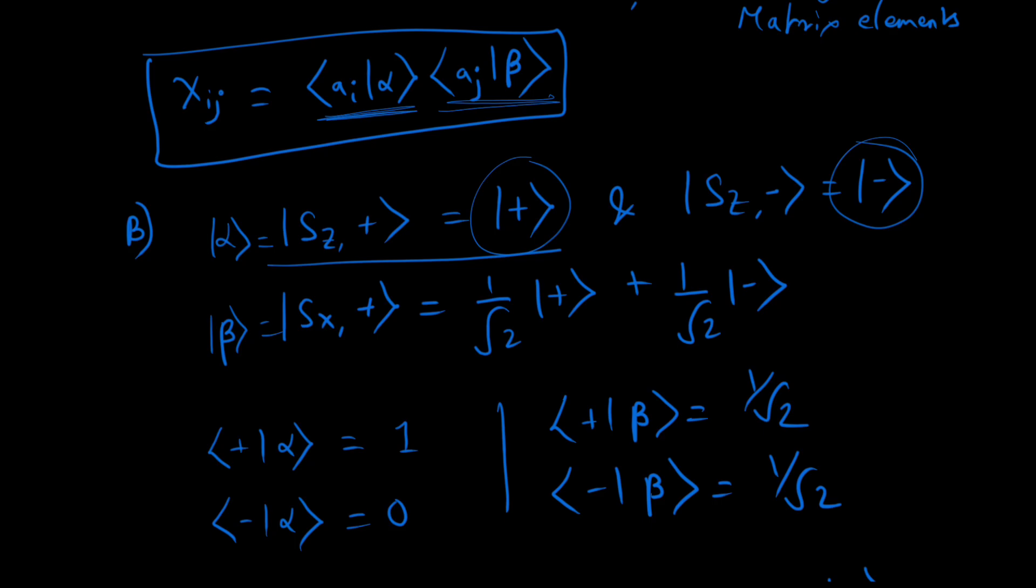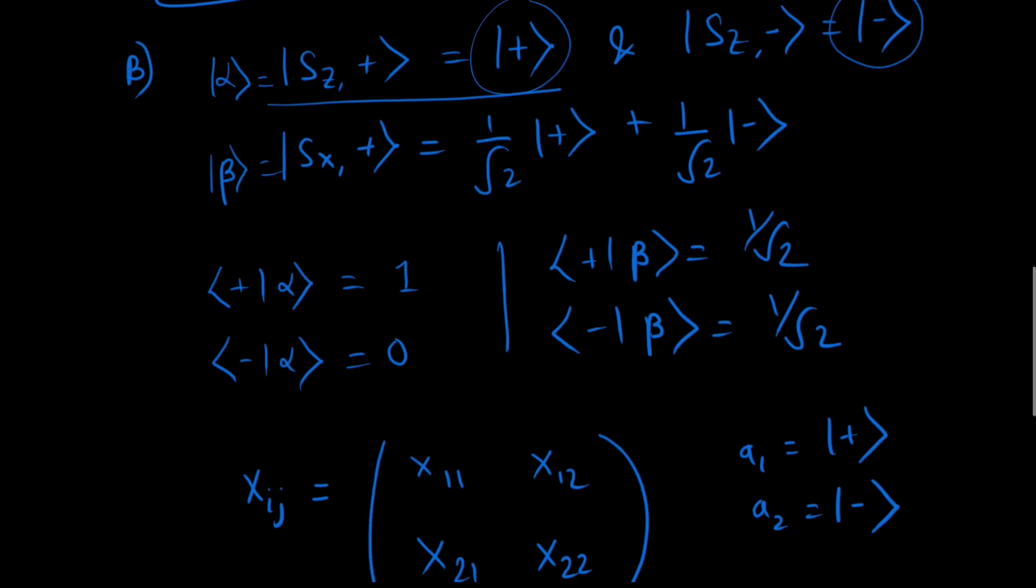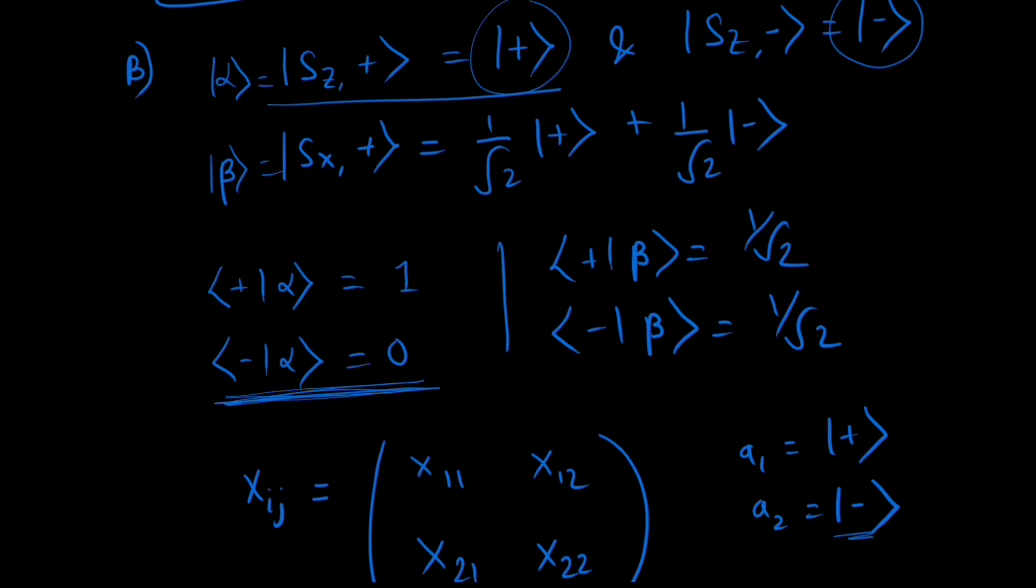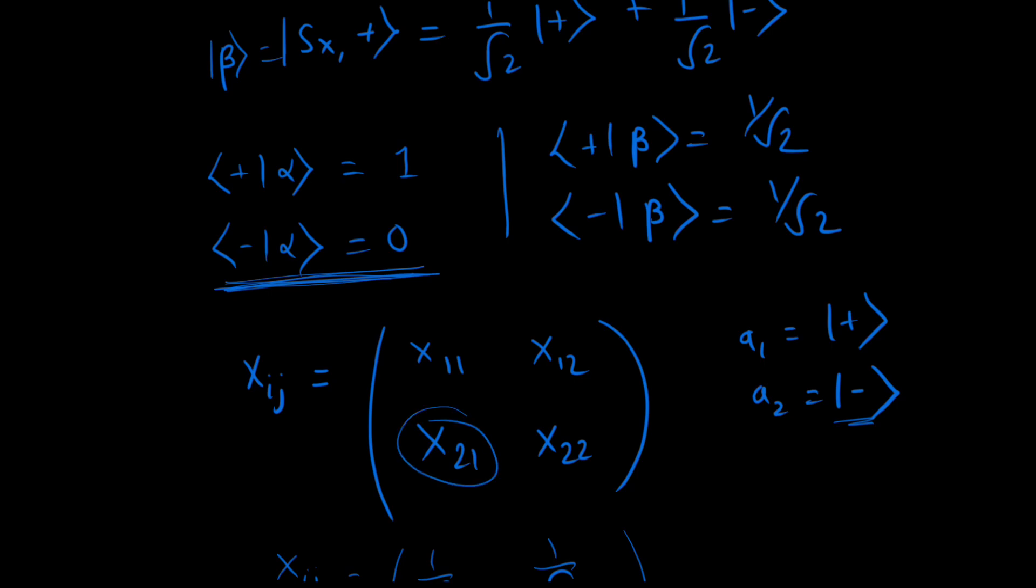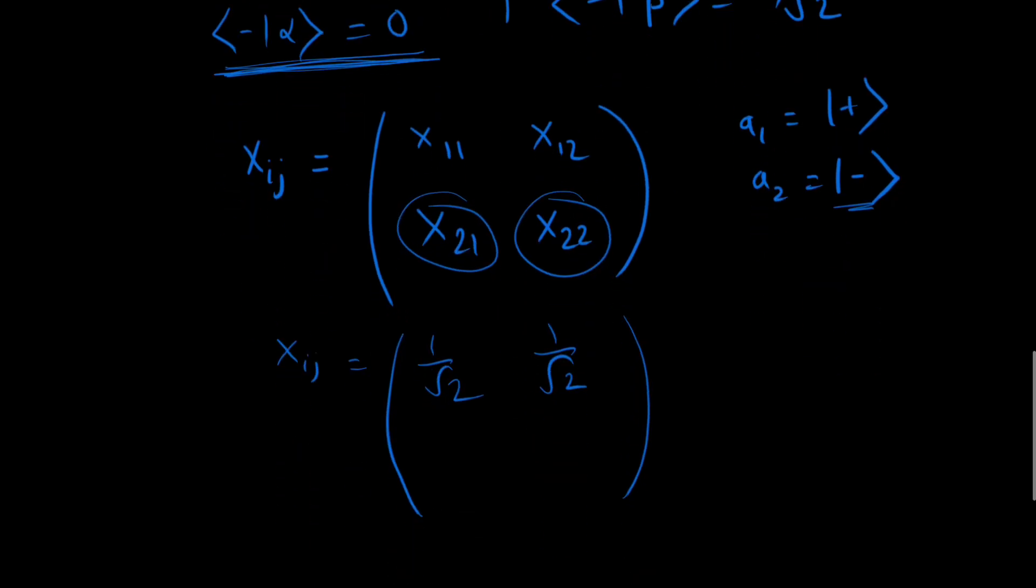Now for the second term, that is a2, a2 is just minus. And for minus alpha it's always 0. So both these terms would be 0. So we get 0 here and 0 here as well.